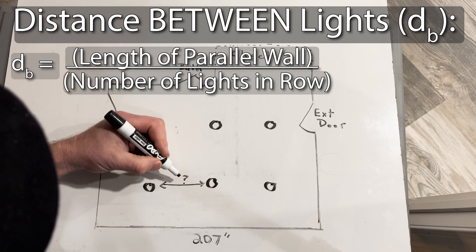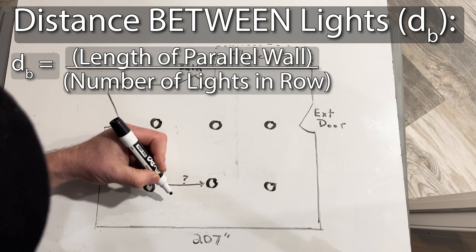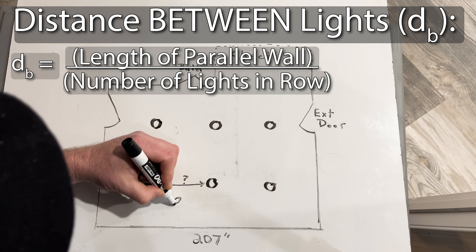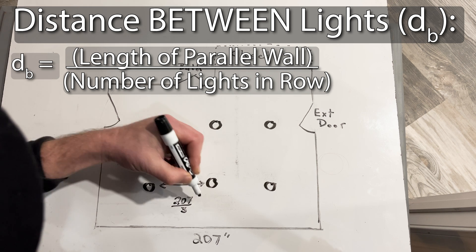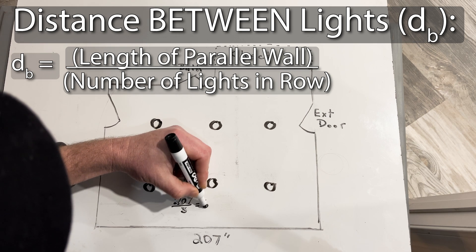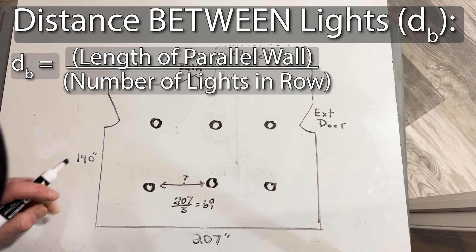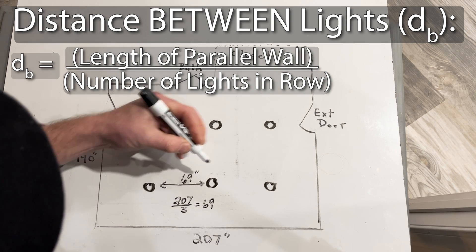For example, I've got three lights in a row parallel to the 207-inch wall. So I take the wall length, 207 inches, divided by the number of lights, three, which gives me 69 inches. So I'll have 69 inches between each pair of lights.